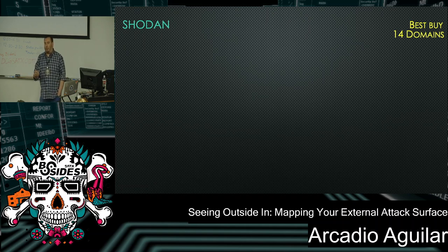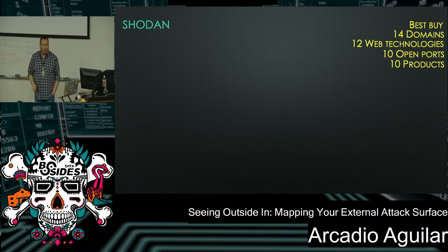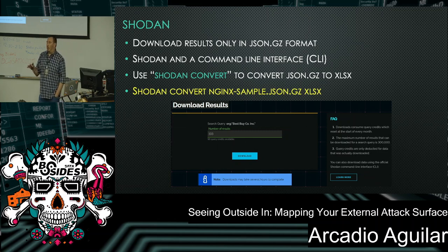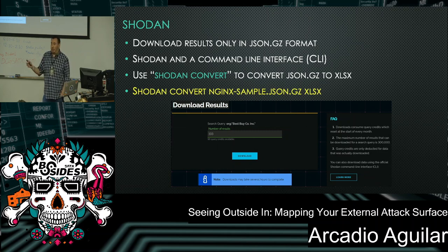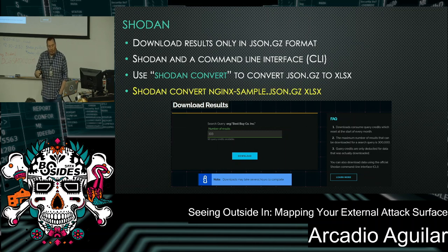Updating the ticker: we found 14 new domains to run back through DNS Dumpster, 12 web technologies. On downloading from Shodan — it's not as easy as DNS Dumpster. By default on the web GUI, you get a compressed JSON format. If you prefer CSV, there's a command line library for Shodan — you'll need a Linux box, download the package, use the Shodan converter command substituting your file name, and convert to CSV. Not as simple, but you can do it.